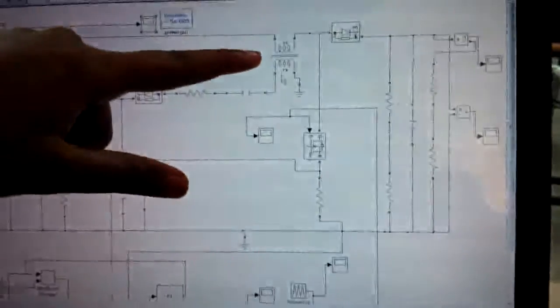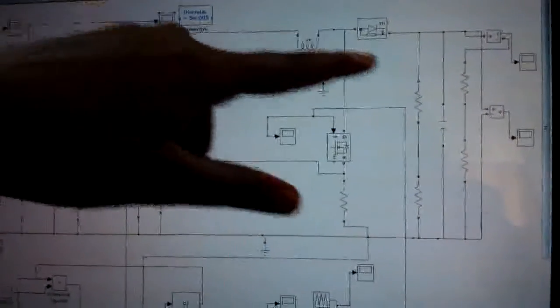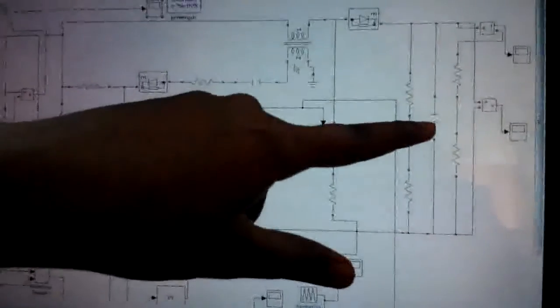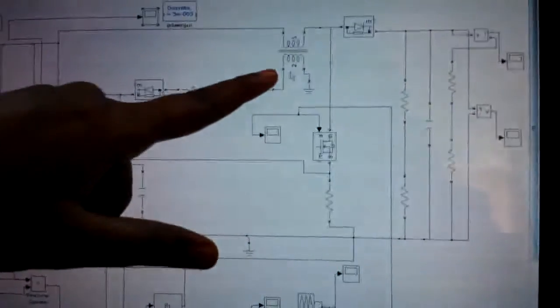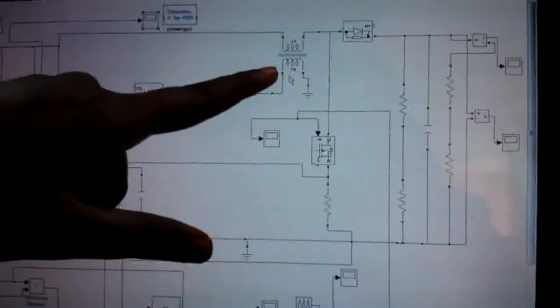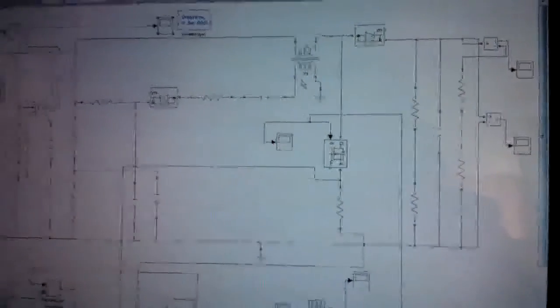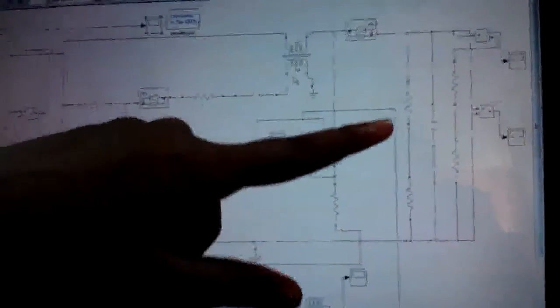Now, coming to this one, this is our boost inductor. Then, this is our boost capacitor. The boost capacitor along with this boost inductor is used to boost the input voltage of 230V to around 380V DC.